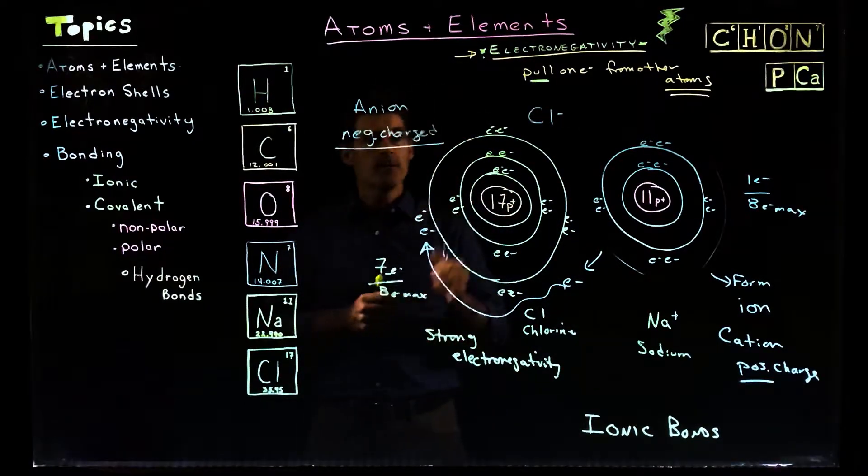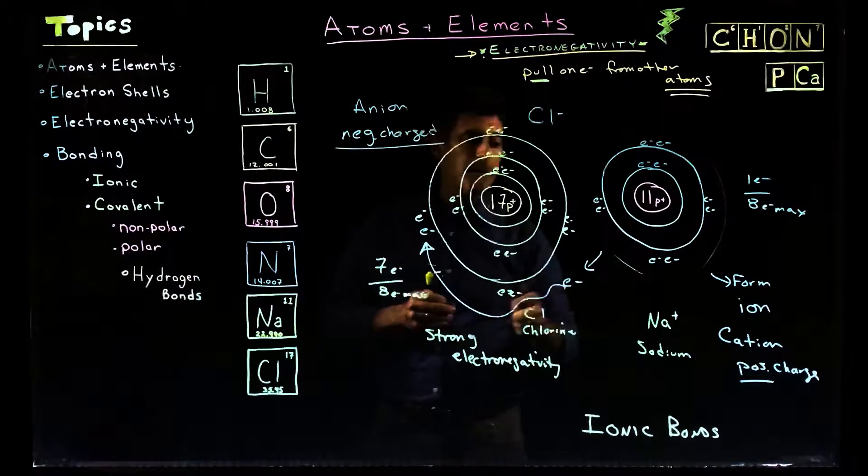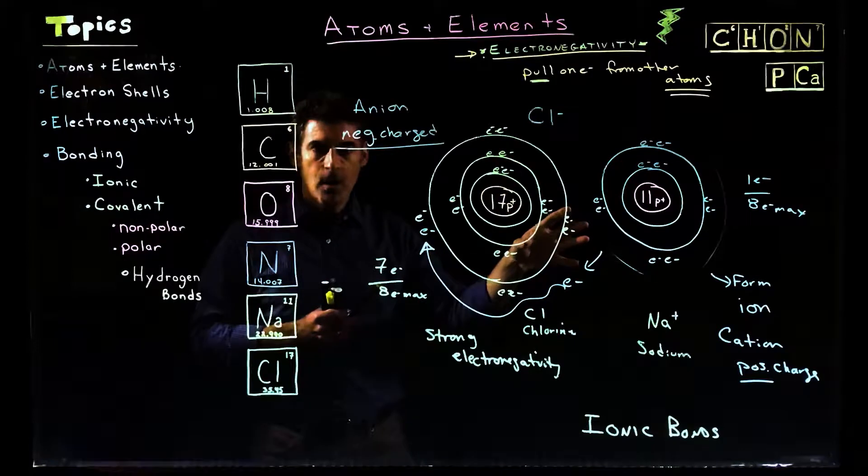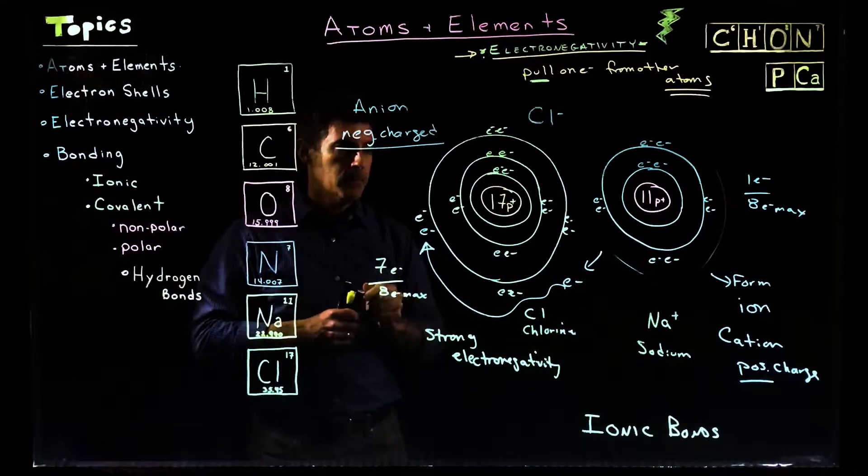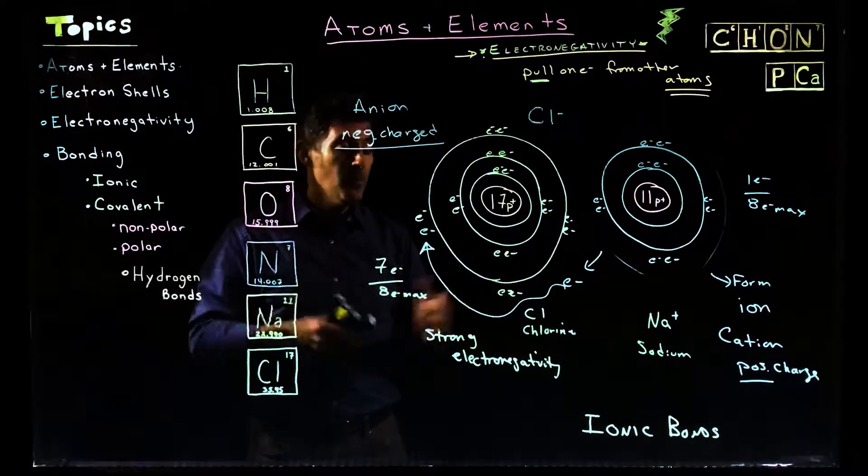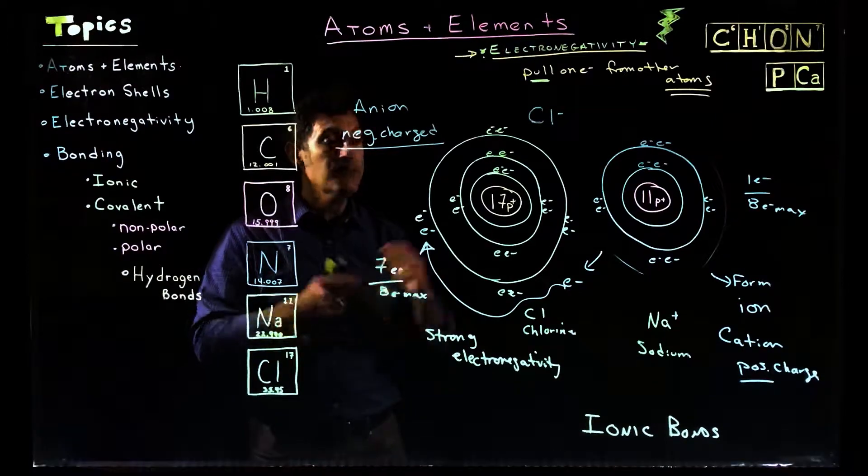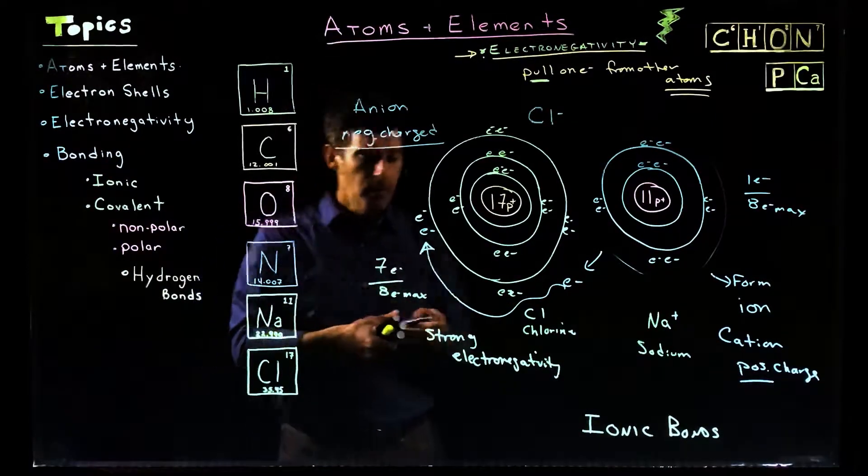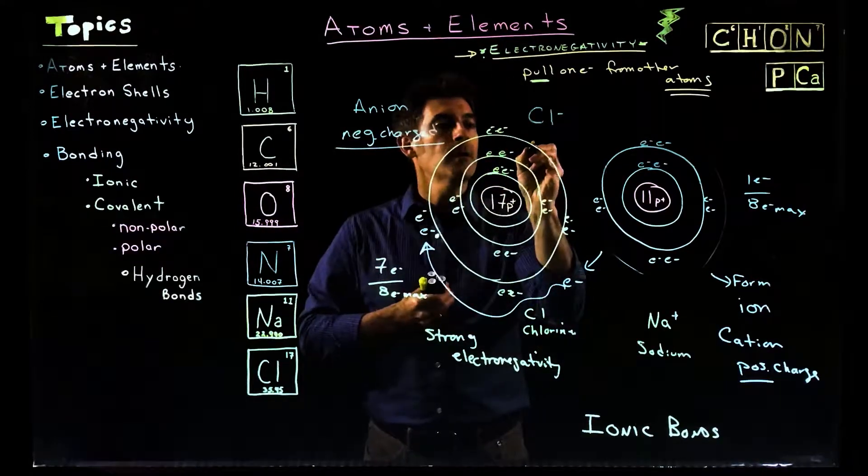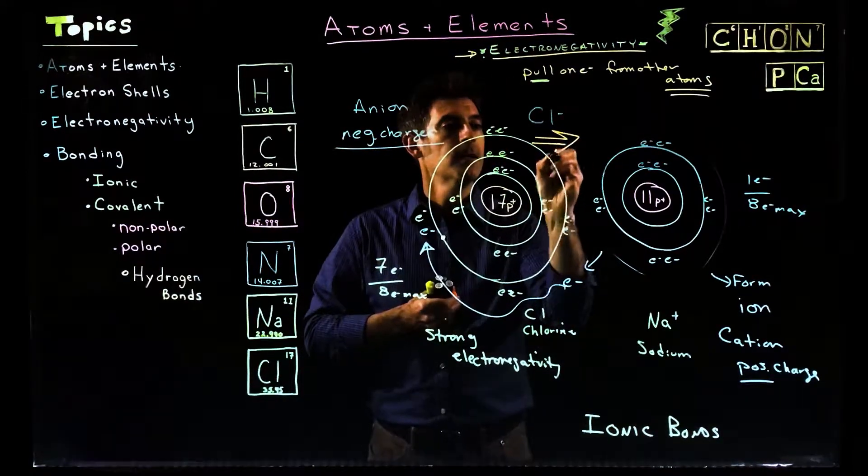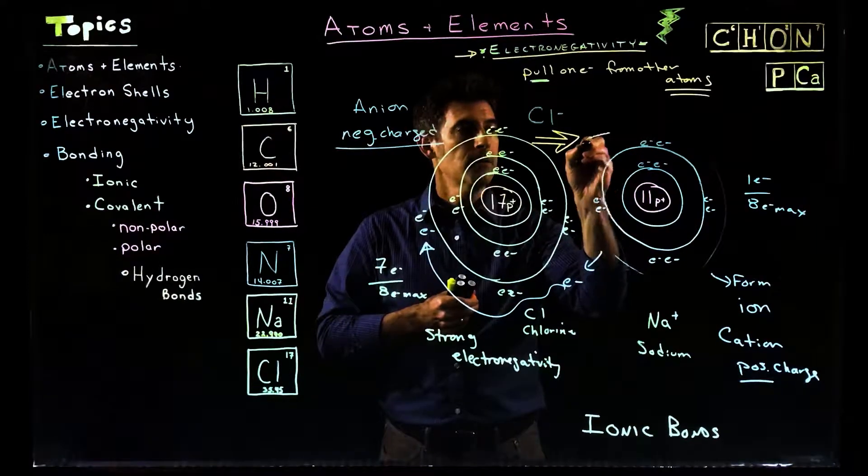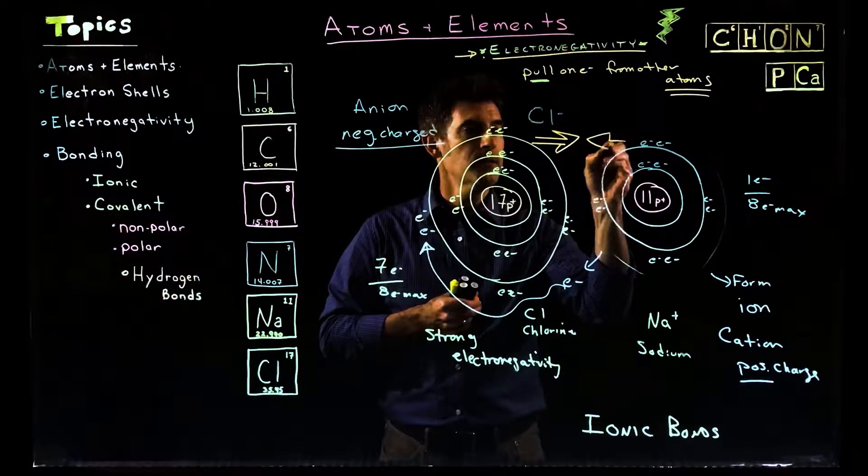Anion is a negatively charged ion. So this is now going to be Cl, chlorine negative. So Cl negative, Na positive. So now we have two different charged atoms. But in this case, we call them ions. And since they're opposite charges, they're actually going to attract each other.